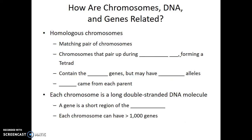Homologous chromosomes are matching pairs of chromosomes. These are the chromosomes that pair up during meiosis I and form a tetrad, or bivalent. The thing about homologous chromosomes is that they contain the same genes, but they may have different alleles for those genes.